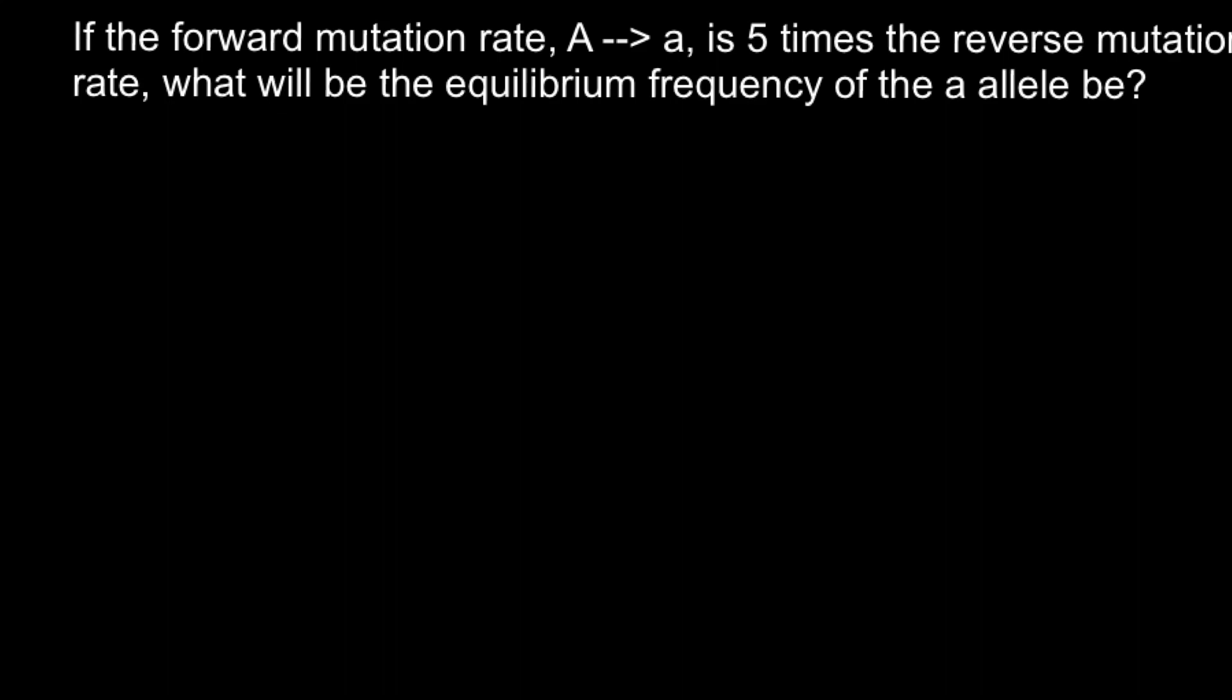Hi, this video is going to be about population genetics, and here is a problem. If the forward mutation rate of dominant allele into the recessive allele is 5 times the reverse mutation rate, what will be the equilibrium frequency of the recessive allele?